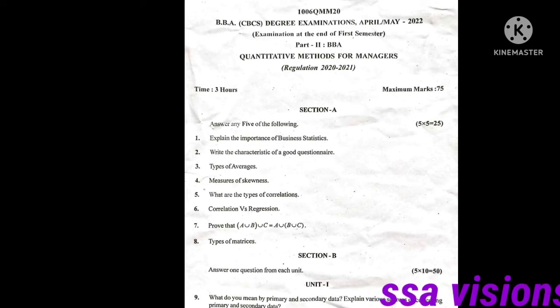The questions are: explain the importance of business statistics; write the characteristics of a good questionnaire; types of averages; measures of skewness; what are the types of correlation; correlation versus regression; prove that A union B union C and A union B, B union C; types of matrix.